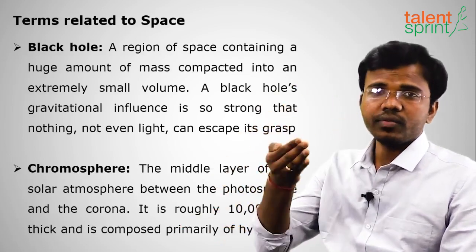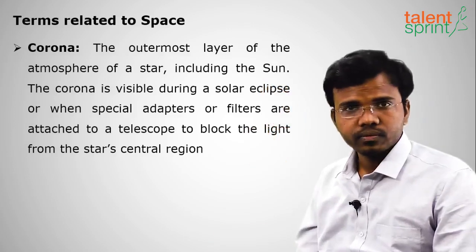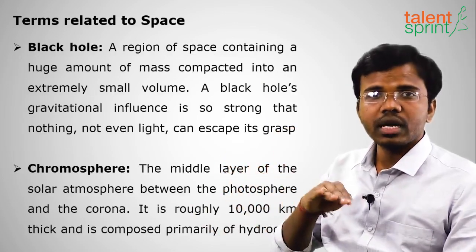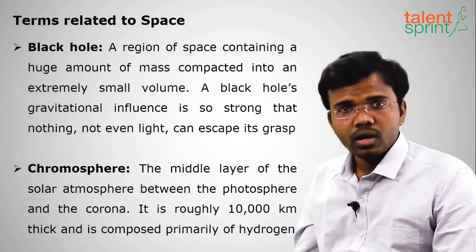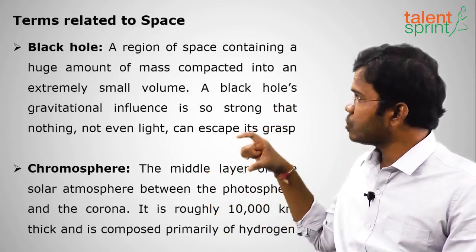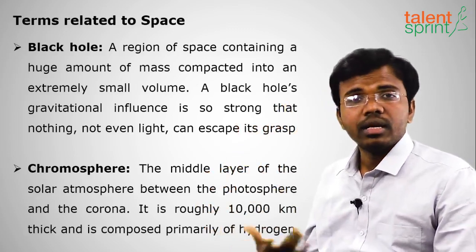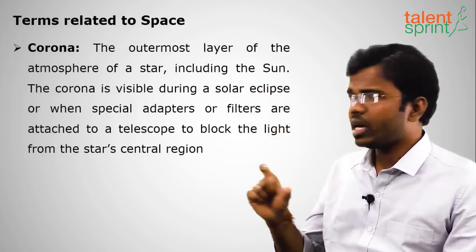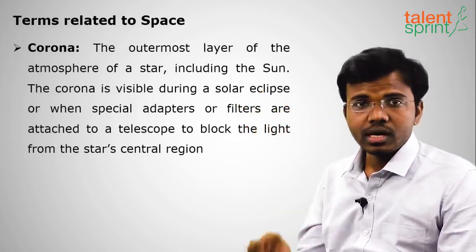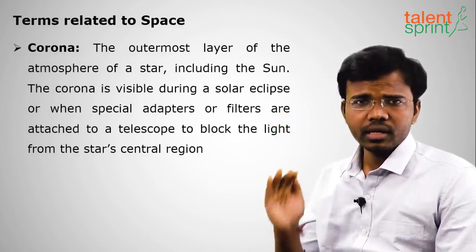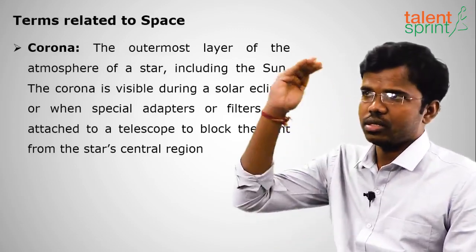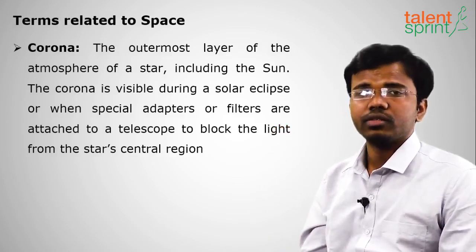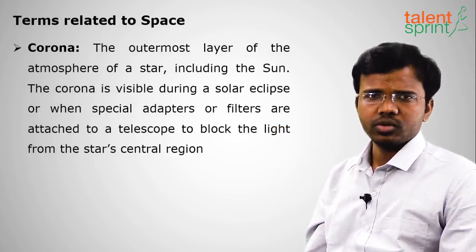The chromosphere is the middle layer of the sun. The outermost layer is the corona, then the chromosphere, then the photosphere. The chromosphere lies between the photosphere and the corona, is approximately 10,000 kilometers thick, and is mainly composed of hydrogen. The corona is the topmost layer of the sun and is not easily visible — special telescope arrangements are needed to see it. The photosphere is at a higher temperature since it is nearest to the center.